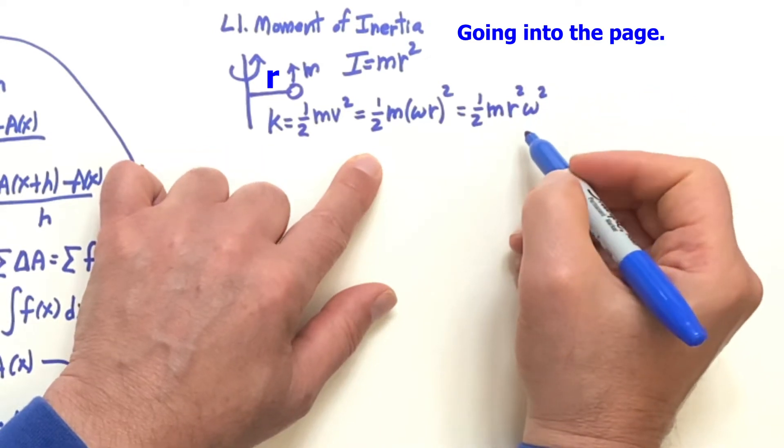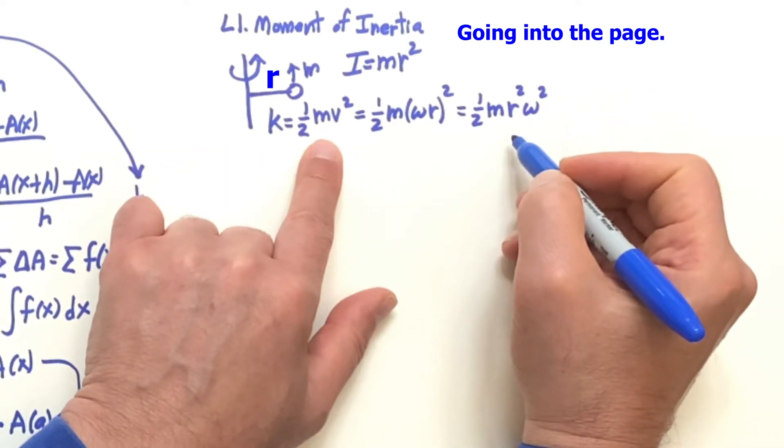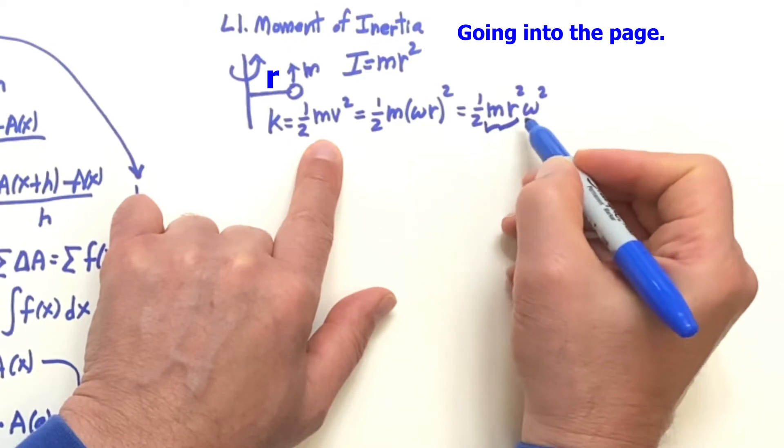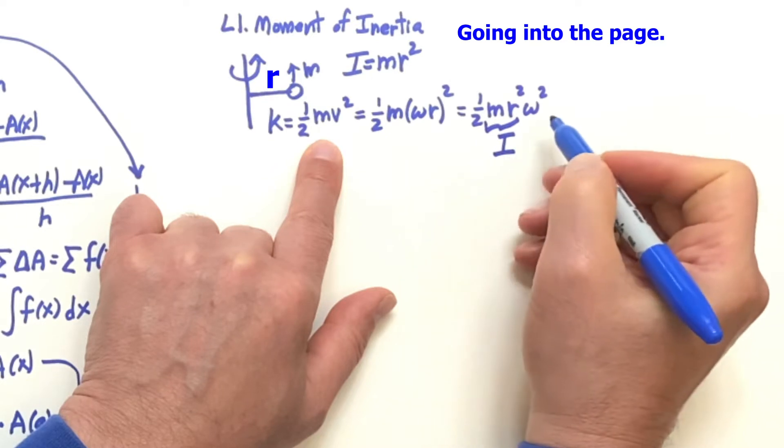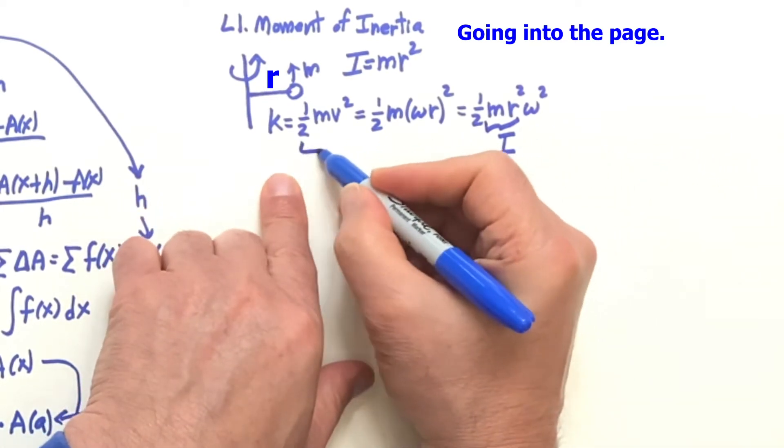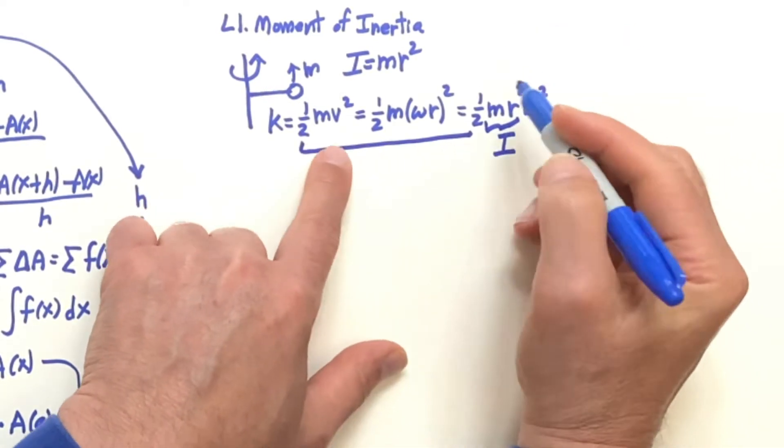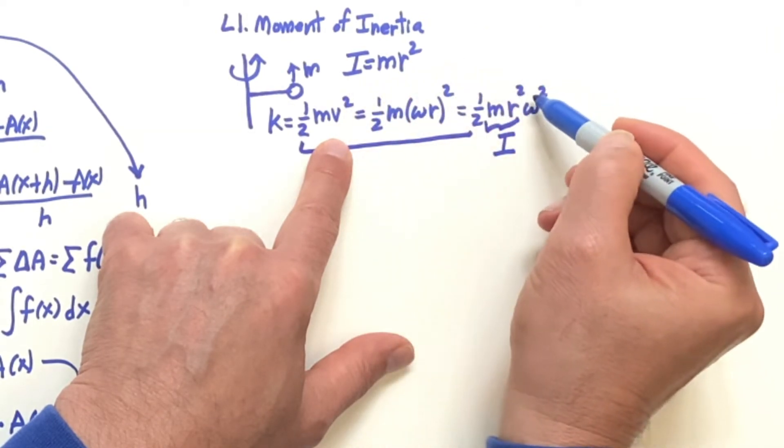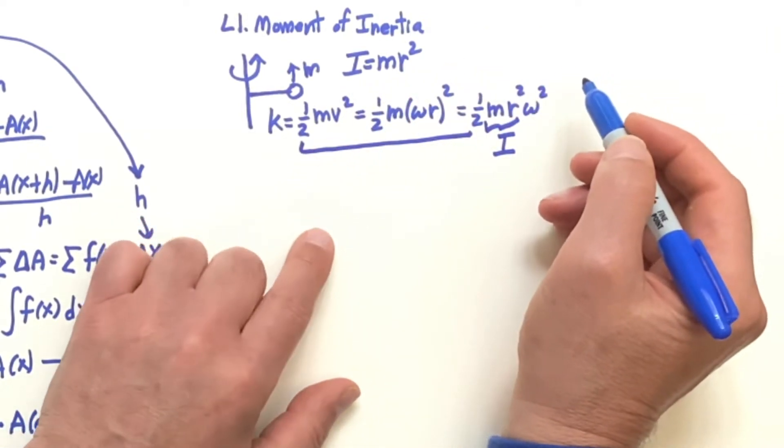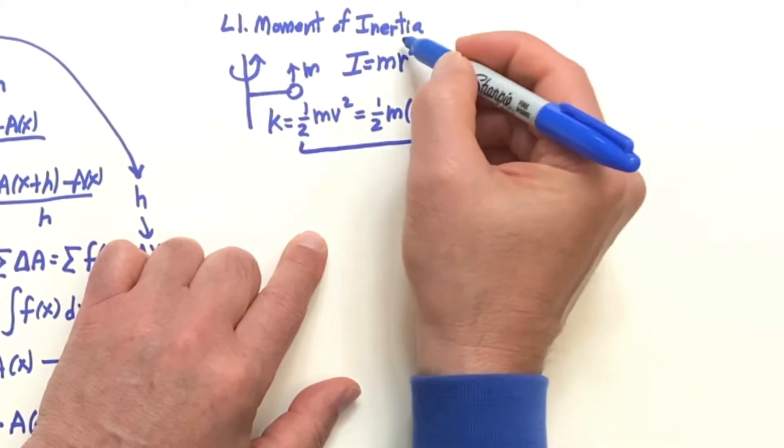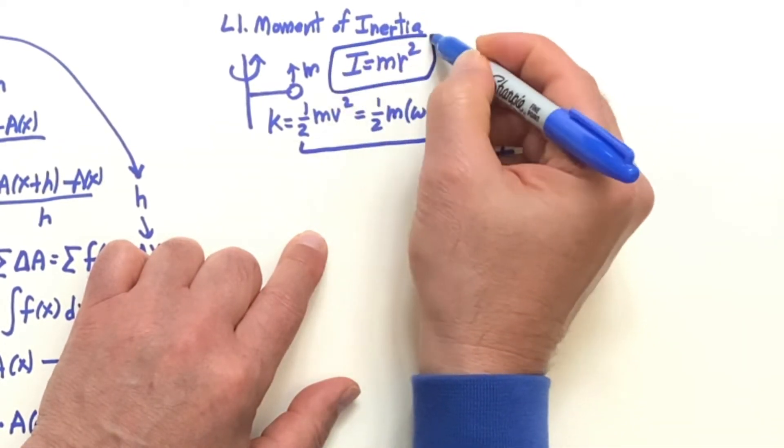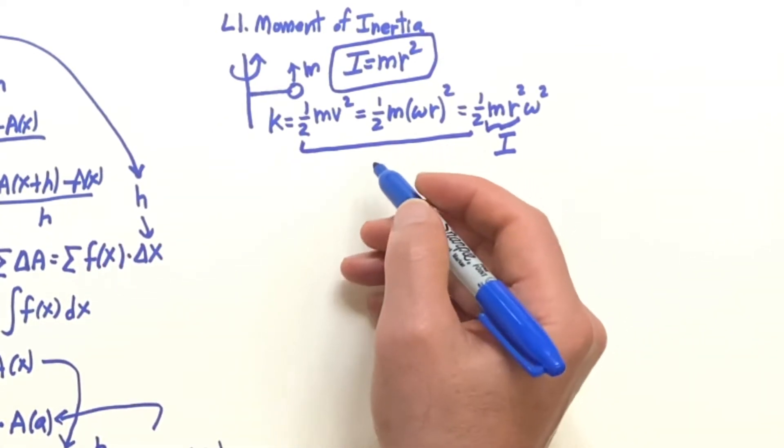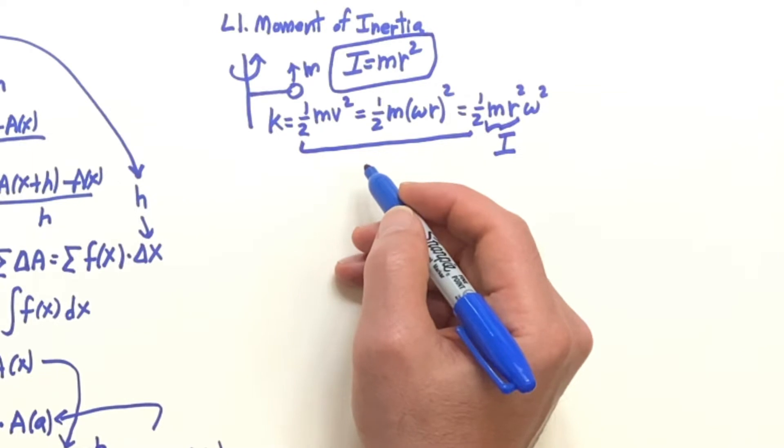And the analogous equation, see, here is to consider m r squared as the inertia for rotation. The one-half is there, and then the velocity becomes the angular velocity. So for a rotation, we have this equation. So that's one way of saying it. But let's look at it another way.